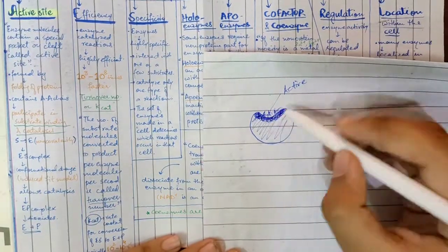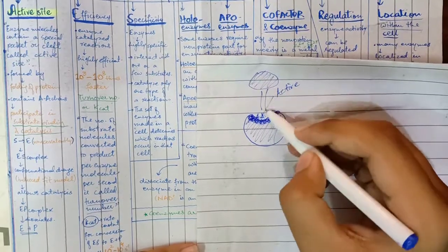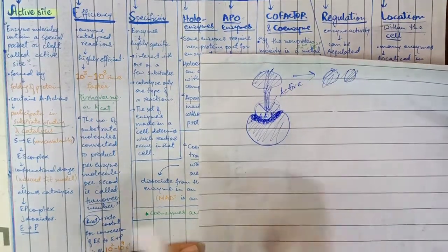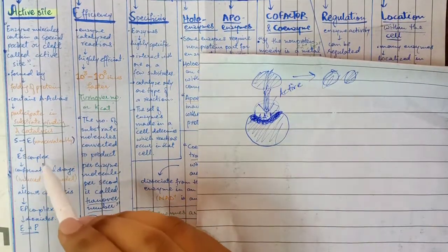The amino acids bind to the substrate and catalyze the reaction. When substrate binds, they form a complex. The substrate and enzyme bind together to form an enzyme-substrate complex.